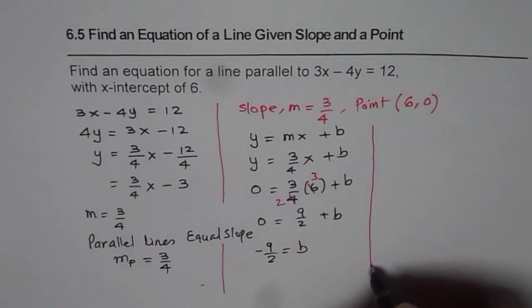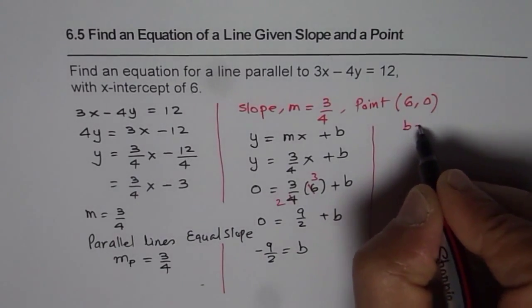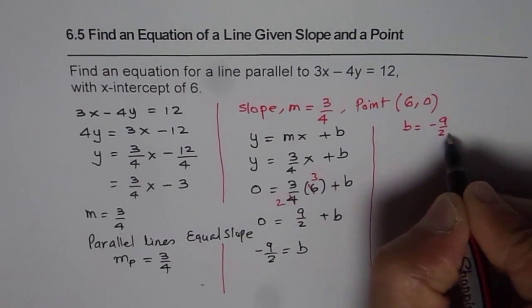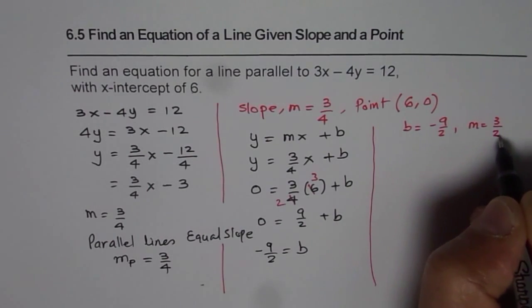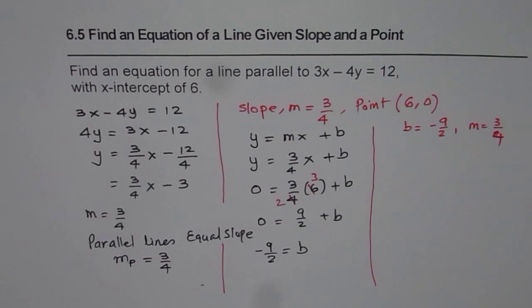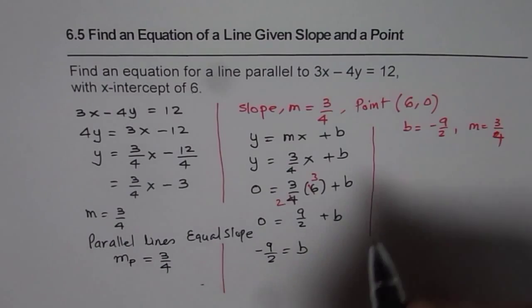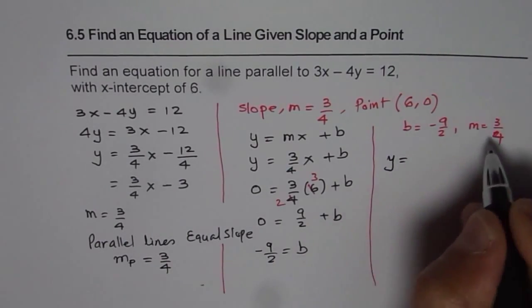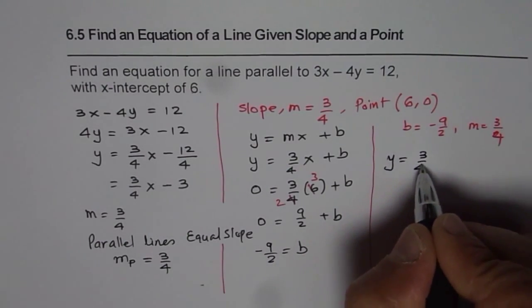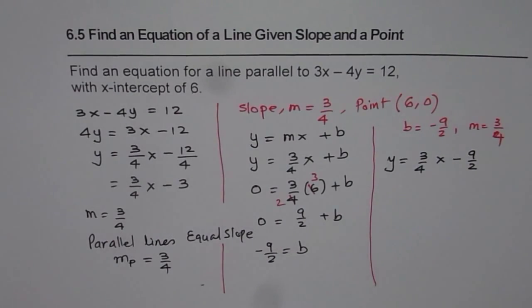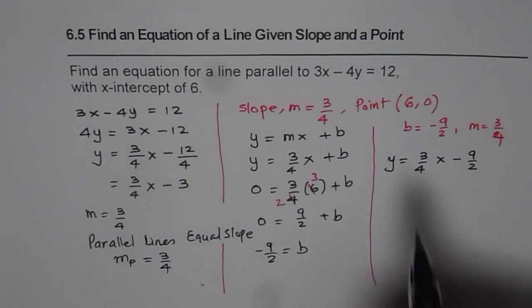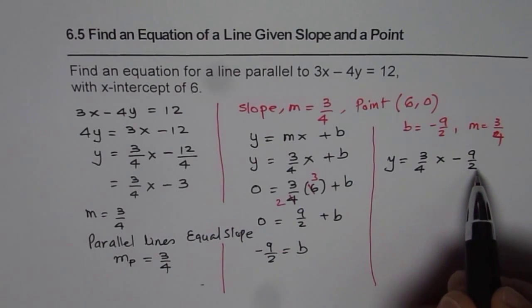So now we can write down, since we know b is equals to minus 9 over 2, we already know slope m equals to 3 over 4. So the equation of the line is y equals to 3 over 4x minus 9 over 2. So that is the equation of line in slope-intercept form.